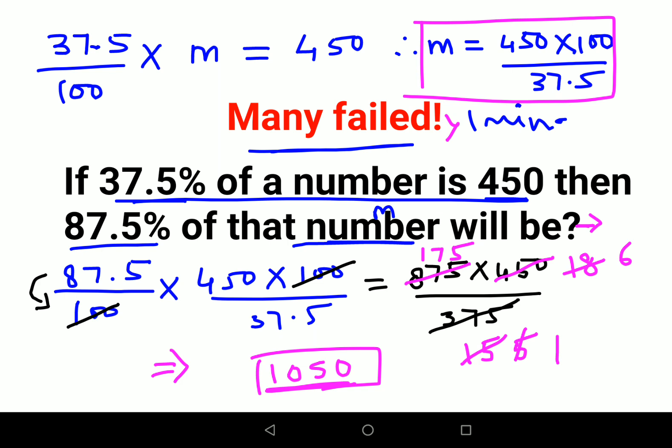when you have to do further calculations, a lot of things will cancel. Like how hundreds got cancelled, the decimal also went away. So you just had to deal with 875 into 450 upon 375, and it's much easier when you know a lot of tables.